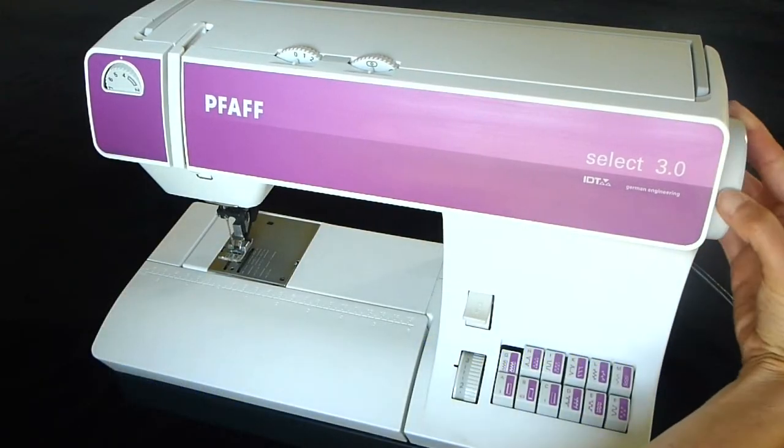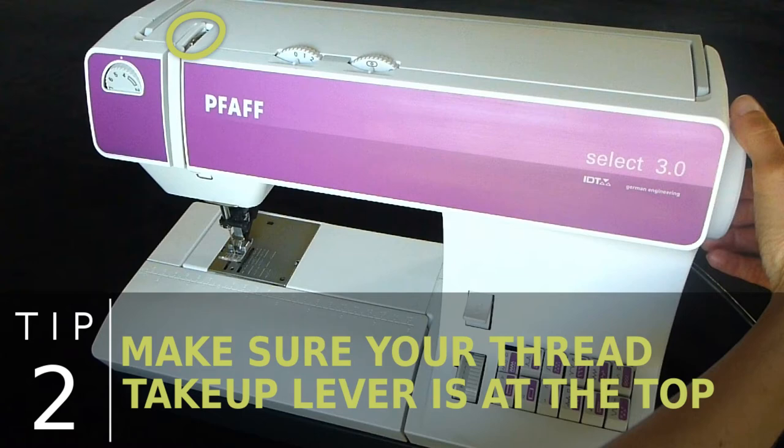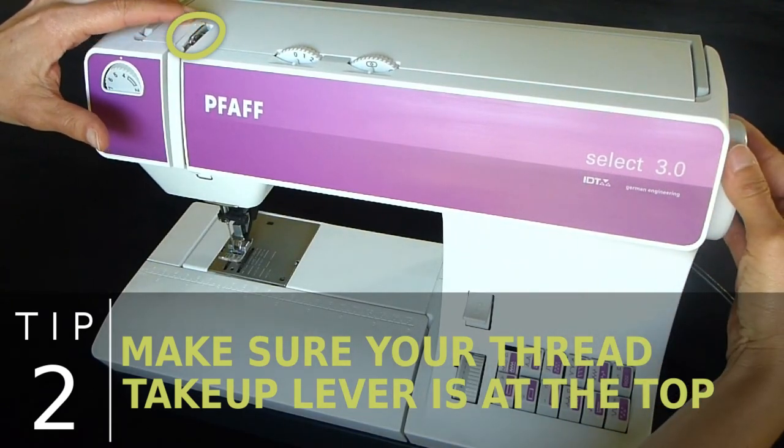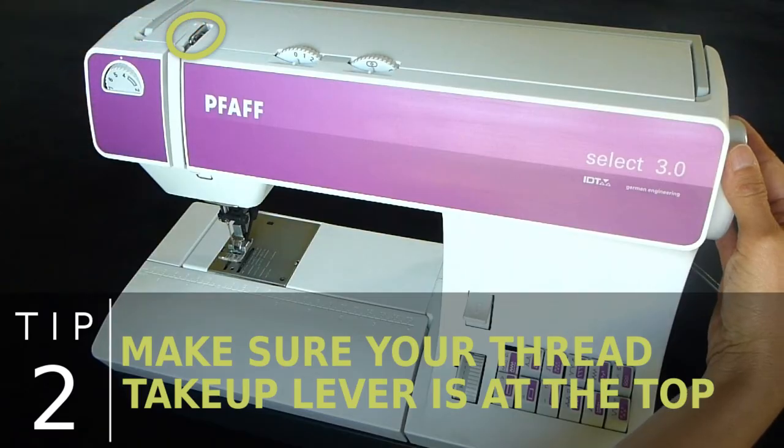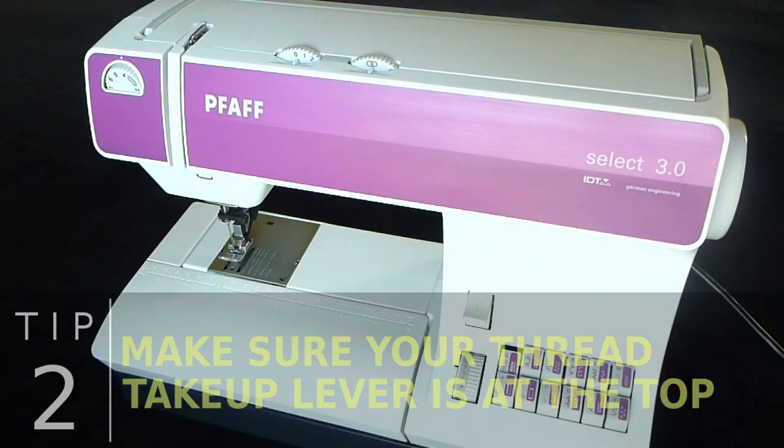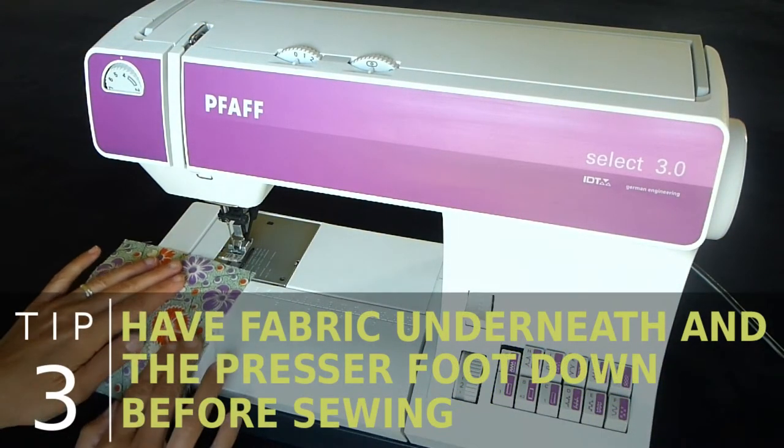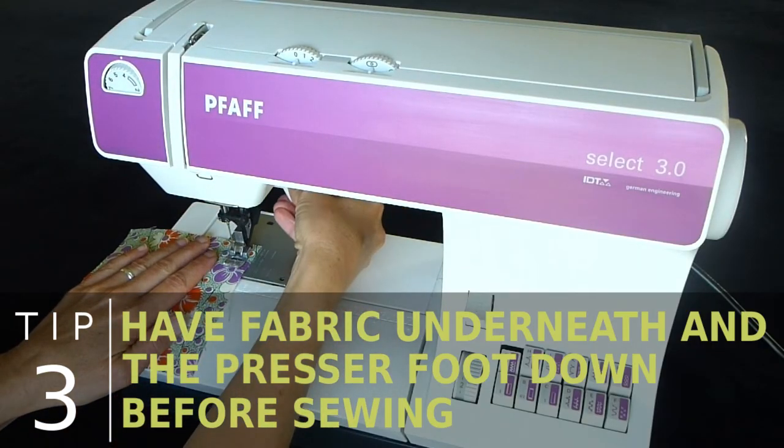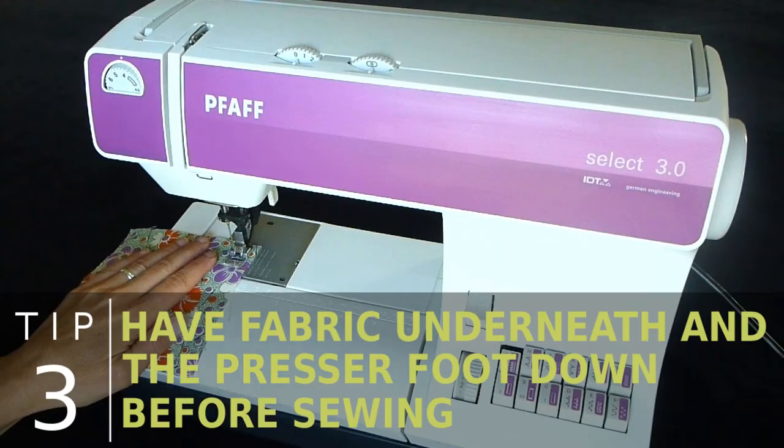Before removing your project from the sewing machine, make sure your thread take-up lever is at the top. Remember, if it is anywhere else it is still working on a stitch. Be sure you have fabric, or in this case paper, underneath and the presser foot down before you sew.